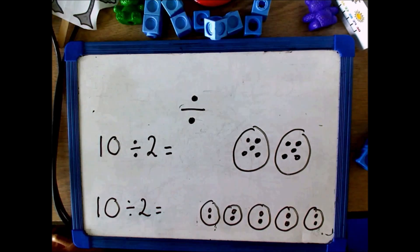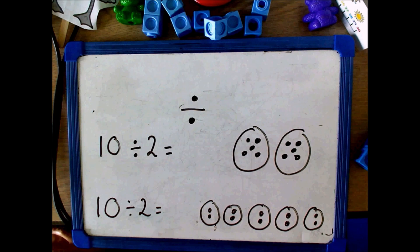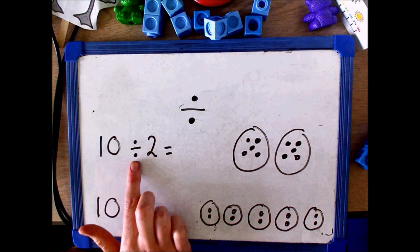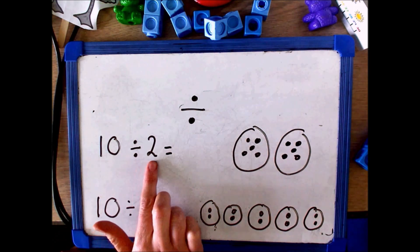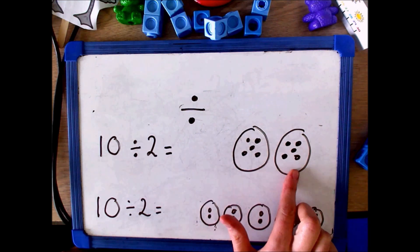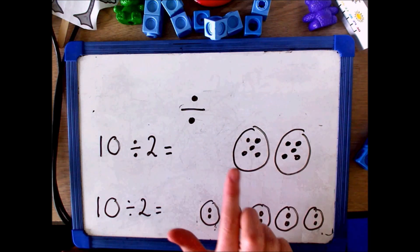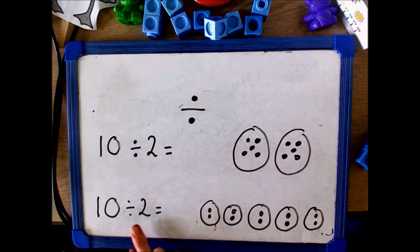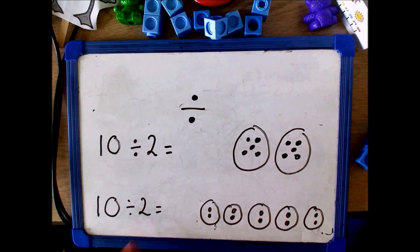Once children understand the concept of sharing, they will be introduced to the division symbol. Children can read '10 divided by 2' as '10 shared between 2', which can be represented visually. Or children could read it as '10 grouped into 2s'.